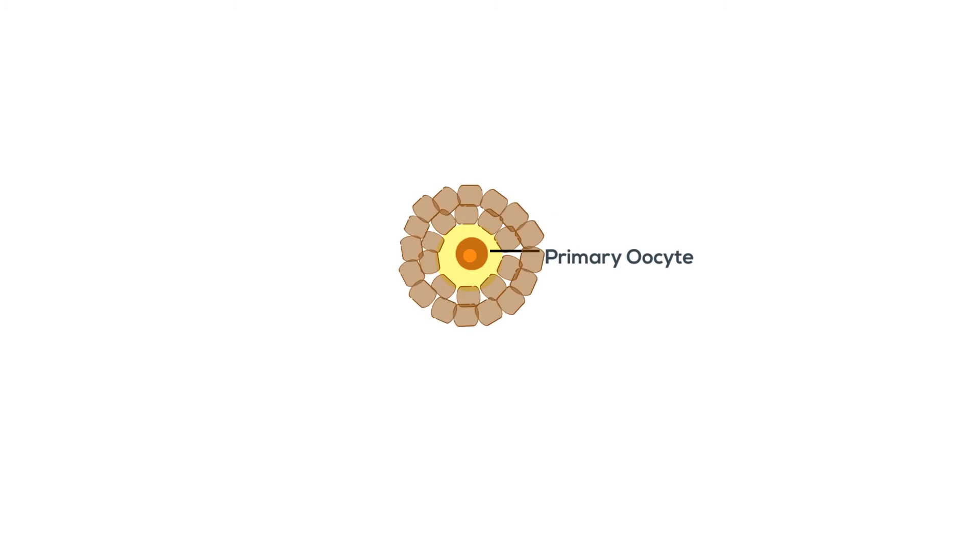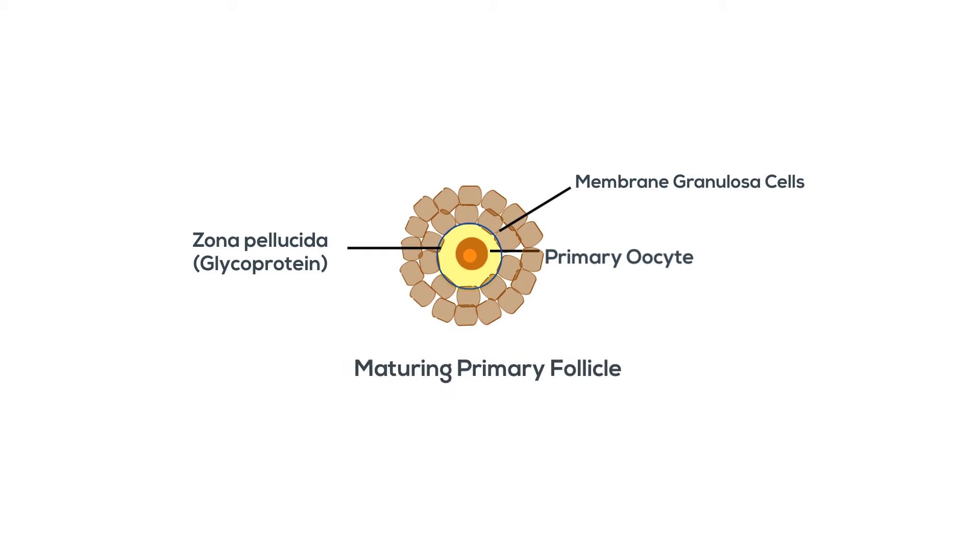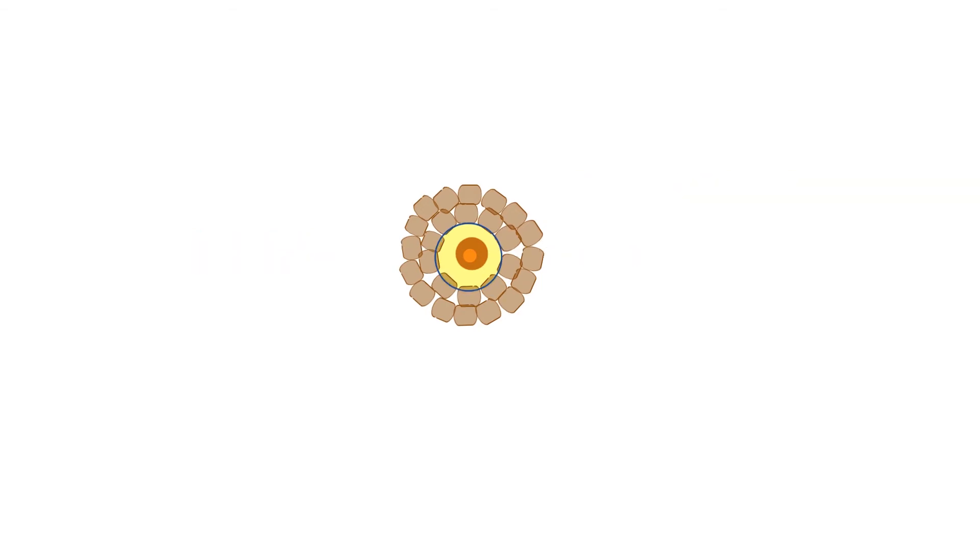Follicular cells proliferate to form several layers for formation of membrana granulosa. Follicular cells are now called granulosa cells. Primary oocyte and its granulosa secrete a glycoprotein substance that forms zona pellucida. This is called maturing primary follicle.